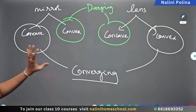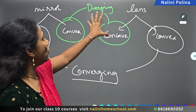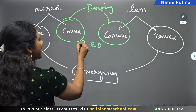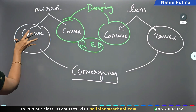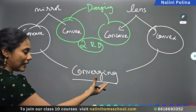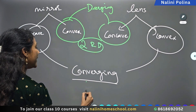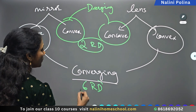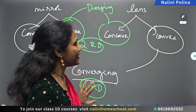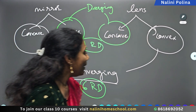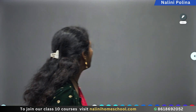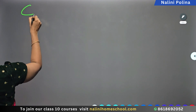Concept-wise, concave mirror and convex lens are the same — you will find six ray diagrams in both cases. And convex mirror and concave lens are also the same as each other. So concept-wise the opposite pairs are alike. But now for sign convention, something very important applies.